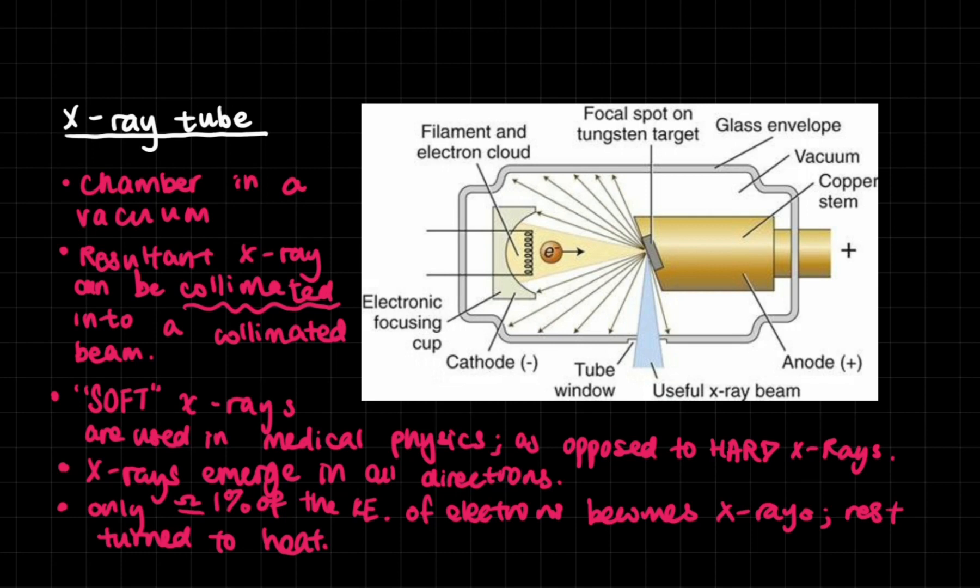So ultimately with this device we're trying to do three things. First of all we're trying to make the electrons that are very fast moving. Second of all we're trying to decelerate these electrons very quickly, very rapidly, and third of all we want to collect the x-rays that are produced. So we have to fulfill these three things using our device and this device is called an x-ray tube which we're going to talk about right now.